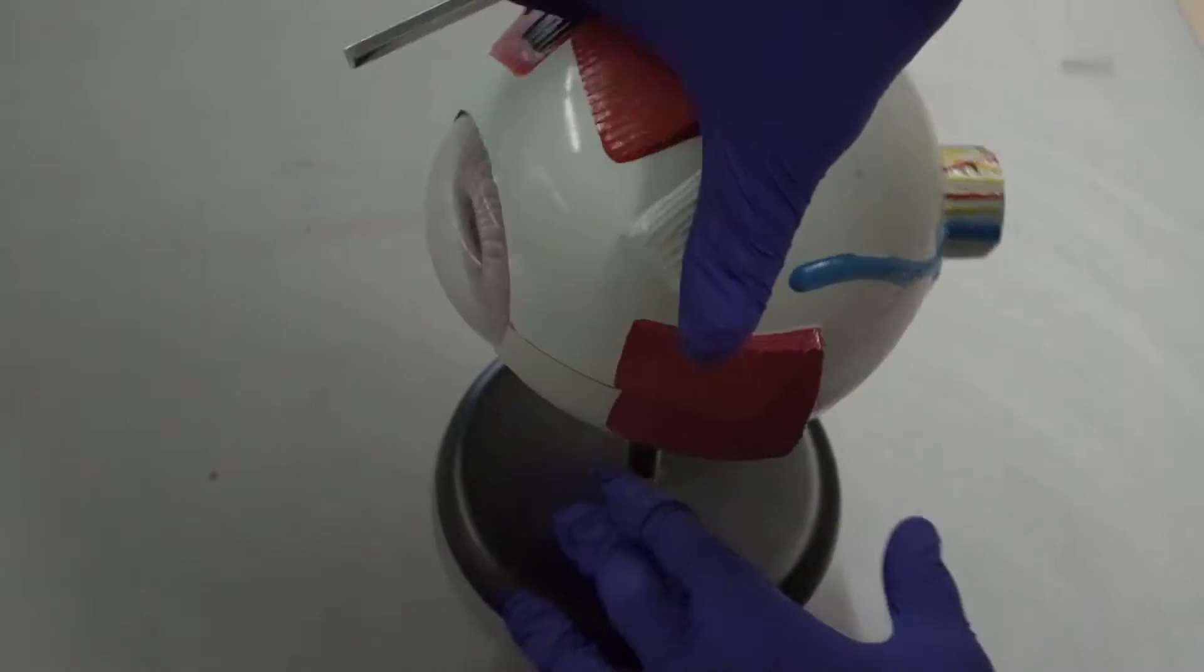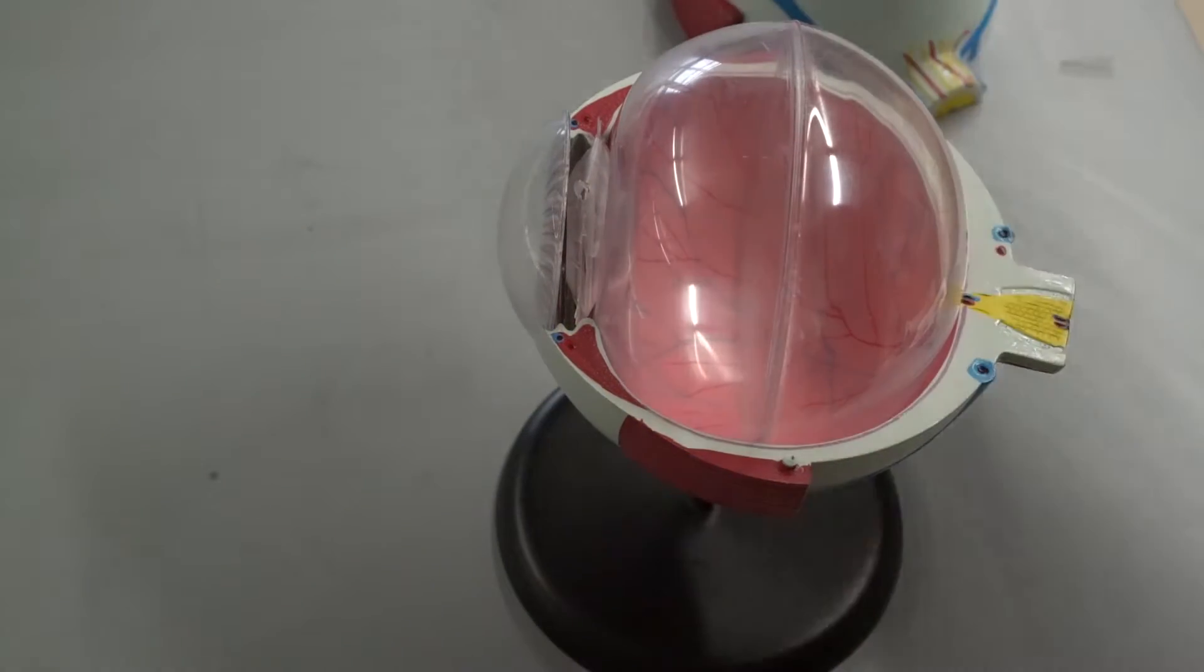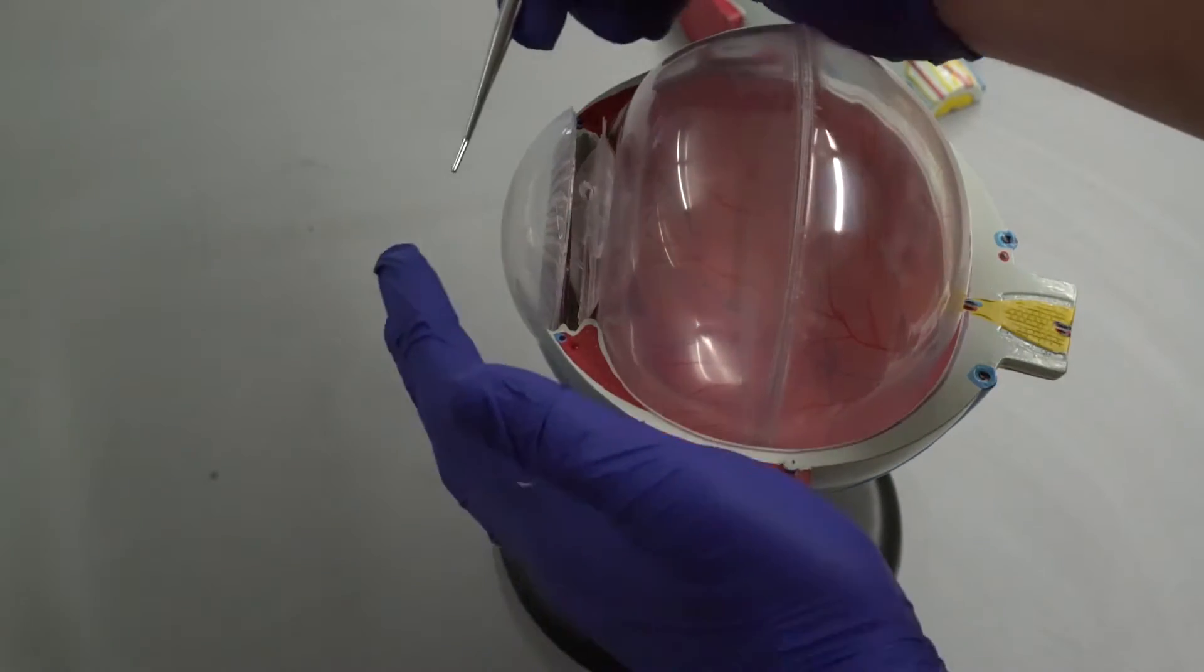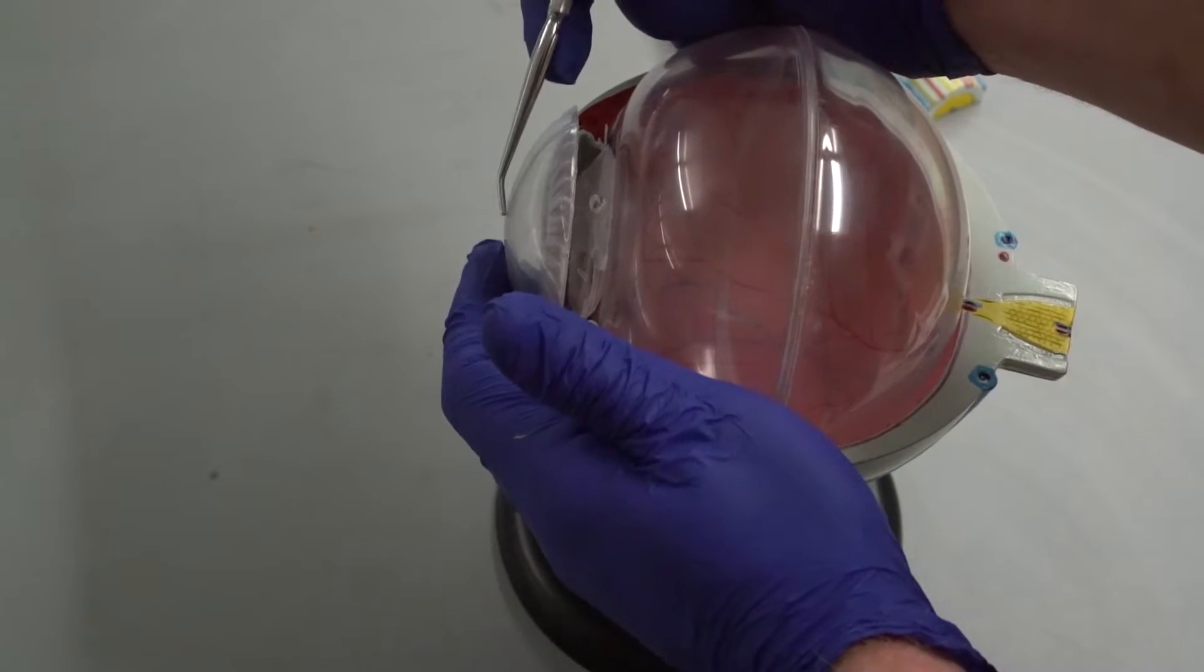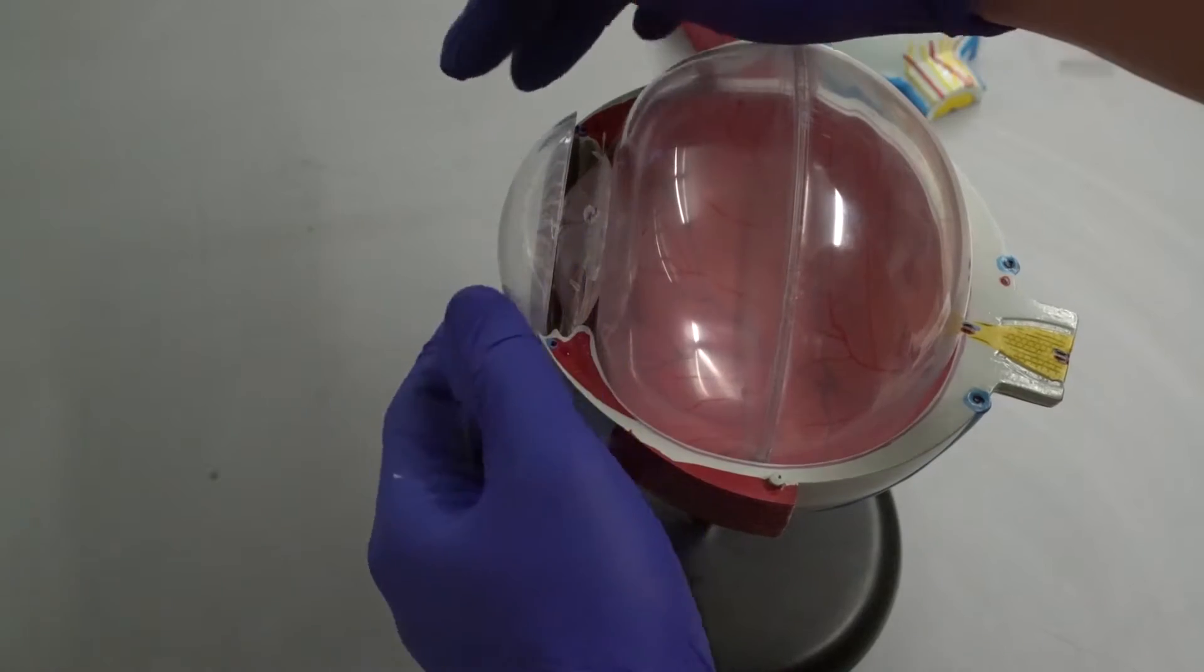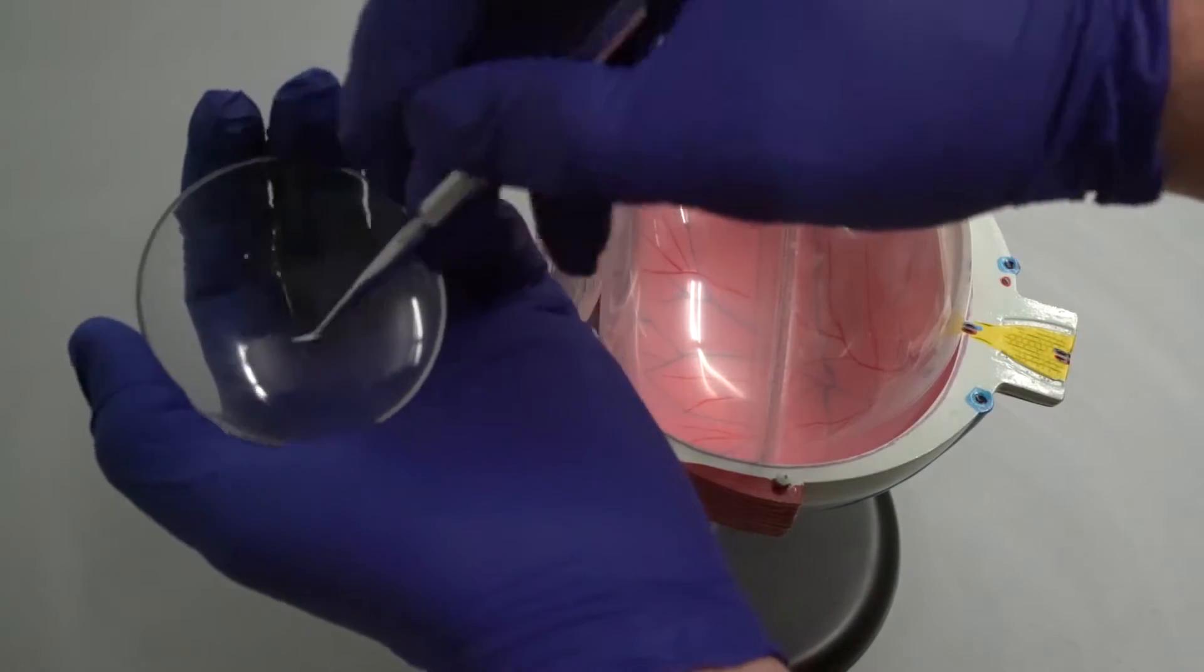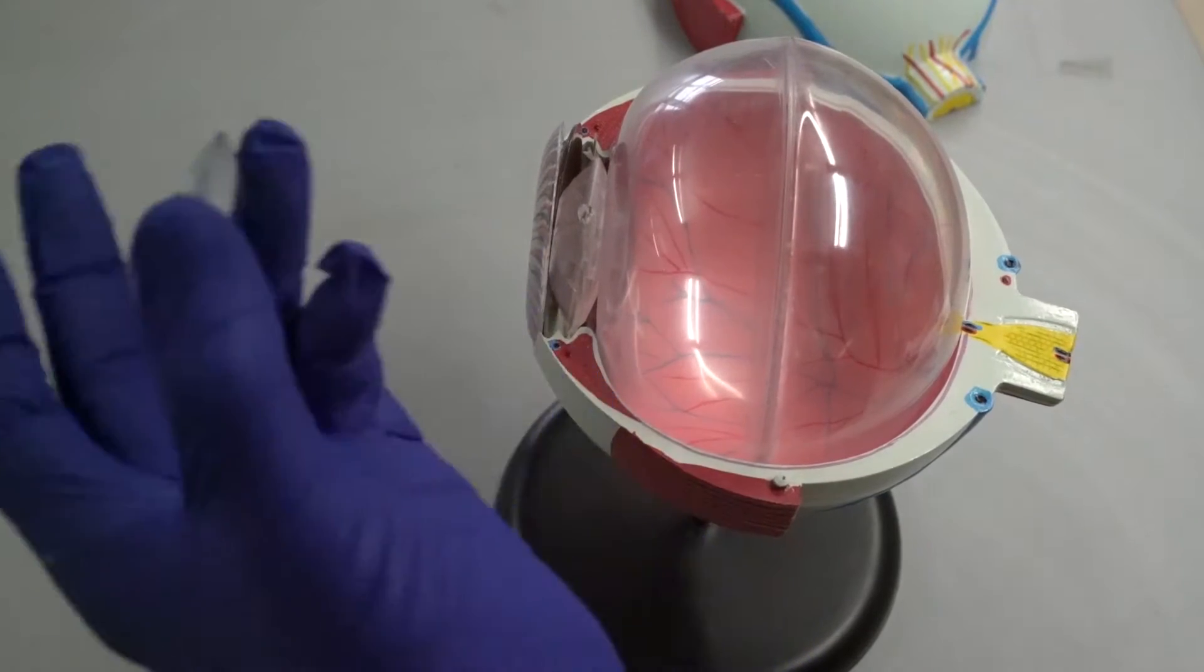Alright, so I'm going to start taking this apart. So behind your cornea—this is not your lens, this is your cornea—your cornea's shape is held together by a liquid called your aqueous humor. So there would be liquid in here, a very liquidy substance that holds this shape.